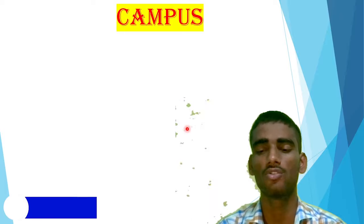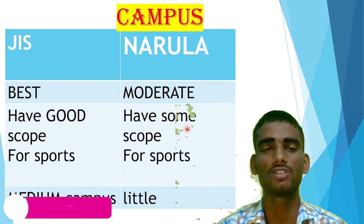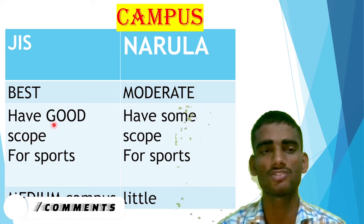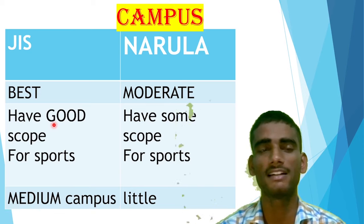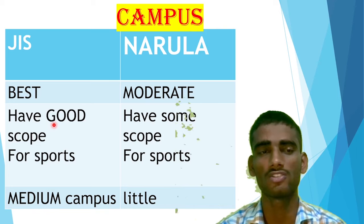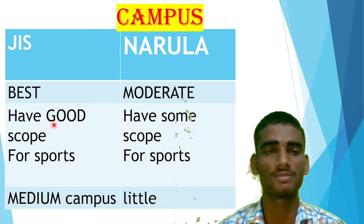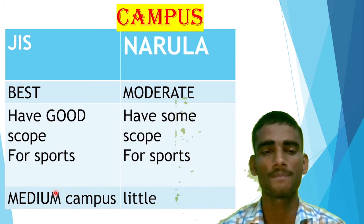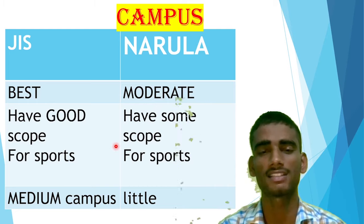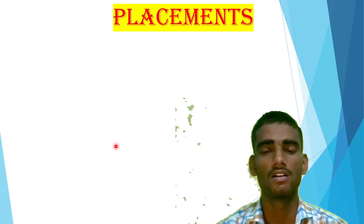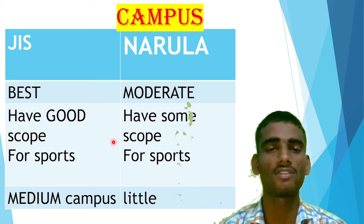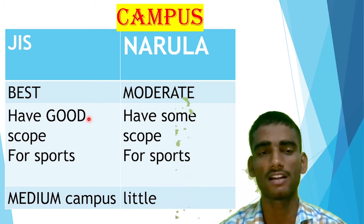Moving to the next section — the campus. We have to spend time in campus life, so we must know about it. JIS College has a good campus and good scope for sports. I have already made detailed reviews of both JIS College of Engineering and Narula Institute of Technology separately — you can check those in the description box. JIS has a medium to good campus, greater than Narula. Narula has a moderate campus with some scope for sports. So in terms of campus, JIS is better.